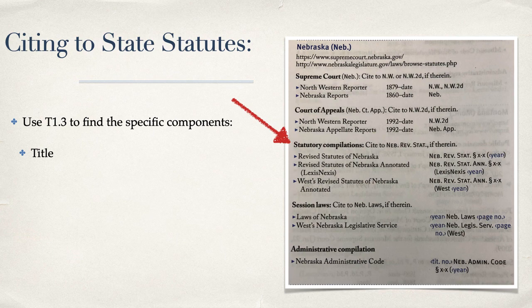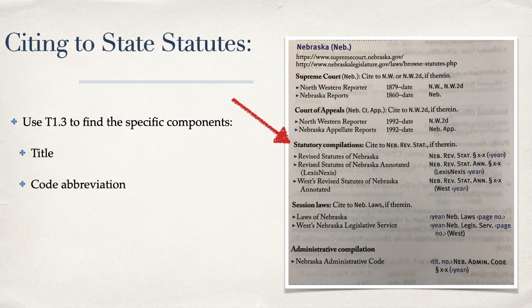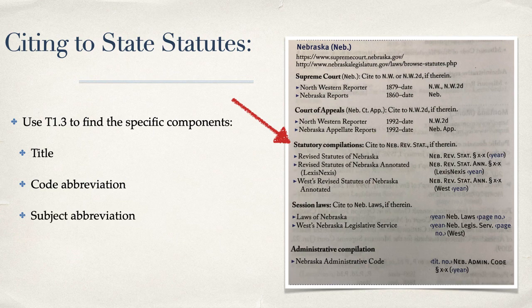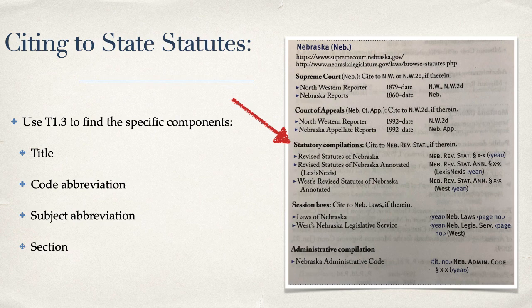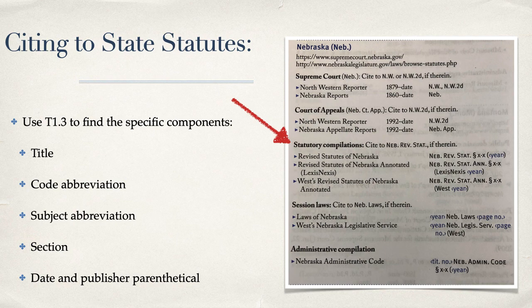T1.3 will tell you the title of the state's official and unofficial codes. It will also give you the abbreviation for each code. Where relevant, it will give you the abbreviation for the subject in the subject codes. It will also show you how to format your sections. Finally, it will give you the information for your date and publisher parenthetical.